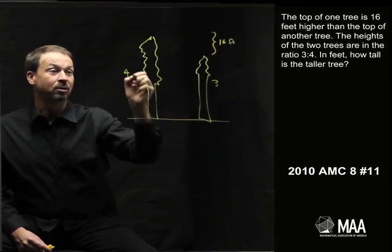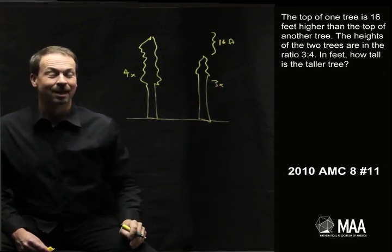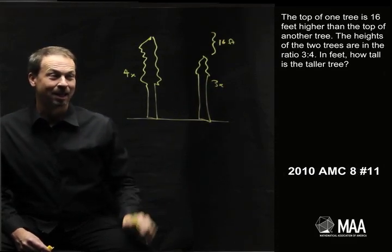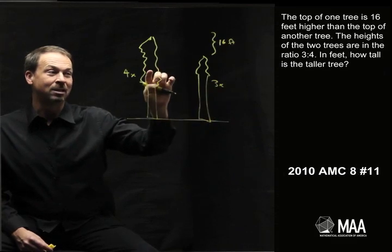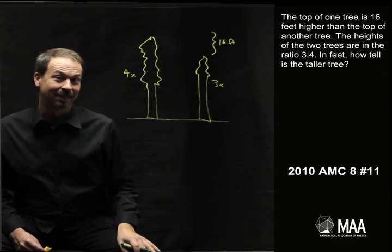Maybe another way to depict a three to four ratio is to call this four of something and three of something. Now, look at this picture. I've called it 4x and 3x to represent the four to three ratio of the heights of the trees. I can stare at this picture and see what x is right now. Can you see it?